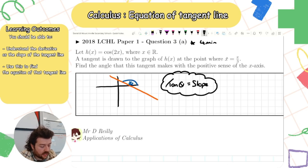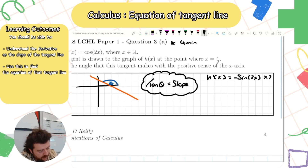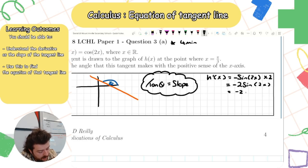The slope is my first derivative evaluated at x = π/3. The derivative of cos(2x) is −sin(2x) multiplied by the derivative of the angle, which is 2, giving dy/dx = −2sin(2x). Evaluating at x = π/3: −2 sin(2π/3) = −√3.